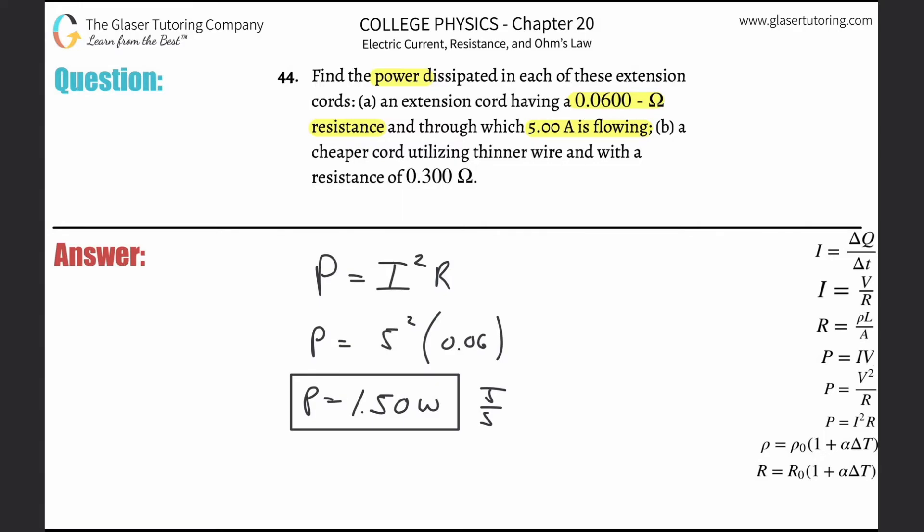When thinking about household wiring or electric cords, as the current drawn by the appliance increases, what happens to the power dissipated by the wire itself? It goes up. More power dissipated by the wire means more energy flow, more energy flow means more heat. So it's always good to have your wires sized properly.